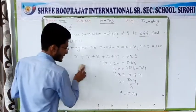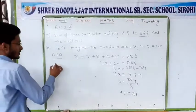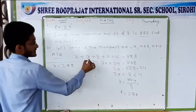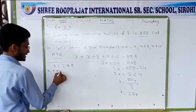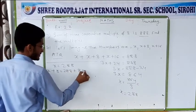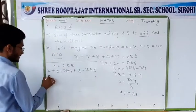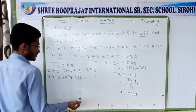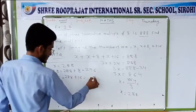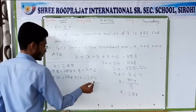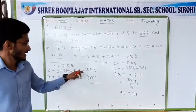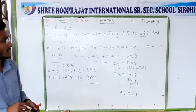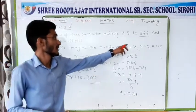So the first multiple of 8 is 288. The second number is x plus 8, that means 288 plus 8 equals 296. The next multiple is x plus 16, so 288 plus 16 equals 304. So the answer is 288, 296, and 304. These are the 3 consecutive multiples of 8 whose sum is 888.